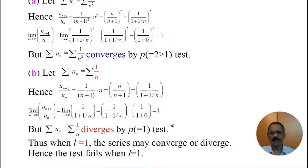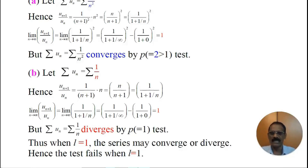In summary, the statement of this theorem: if series Uₙ is a series of positive terms and the limit of Uₙ₊₁/Uₙ as n tends to infinity is L, then the given series Uₙ is convergent if L < 1, divergent if L > 1, and the test fails when L equals 1.